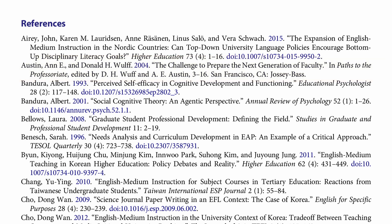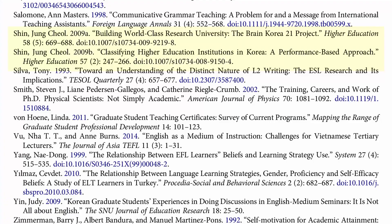Down here we see Bandura 1993 and Bandura 2001. Multiple works by the same author are listed in chronological order: 1993 and then 2001. There's also the Byun entry — Byun comma Gi-young, and then the rest of the names in normal order. A lot of authors there, all spelled out here in the works cited where in the text we saw Byun et al. And here the Sheen entries: Sheen 2009A, 'Building,' and Sheen 2009B, 'Classifying' — two articles by the same author, same year. They're put in alphabetical order by the title: Building comes before Classifying alphabetically, so that's A, and the next one is B. You cite them in the paper as 2009A and 2009B.